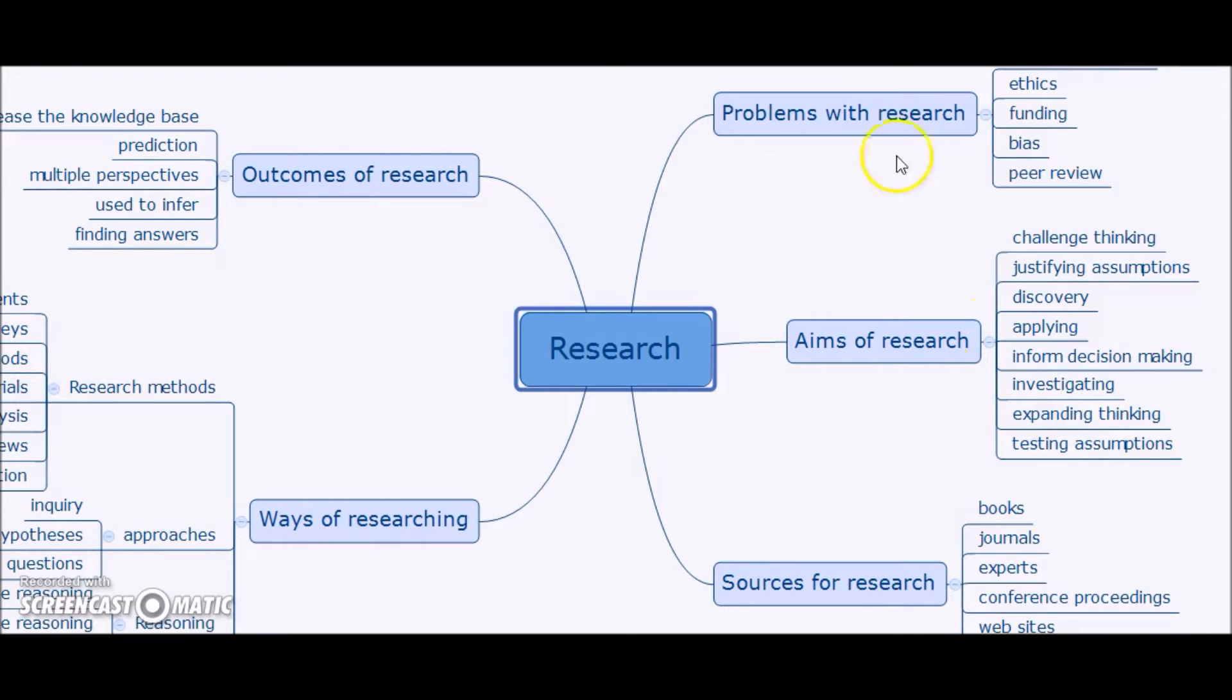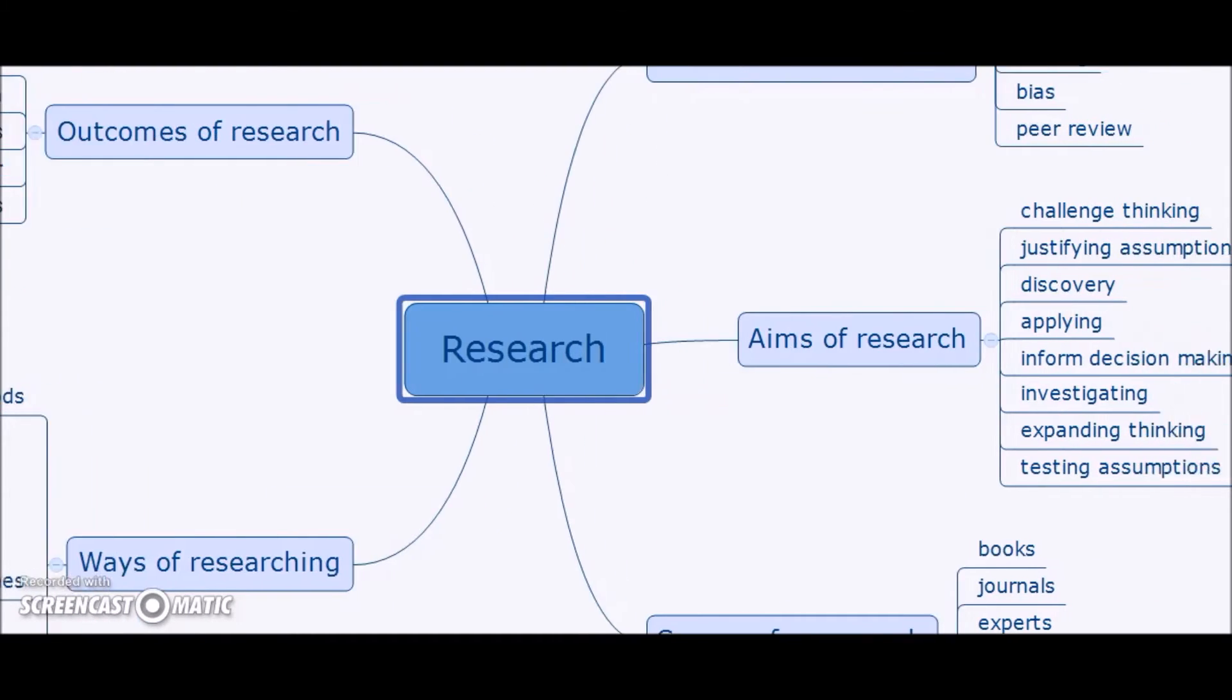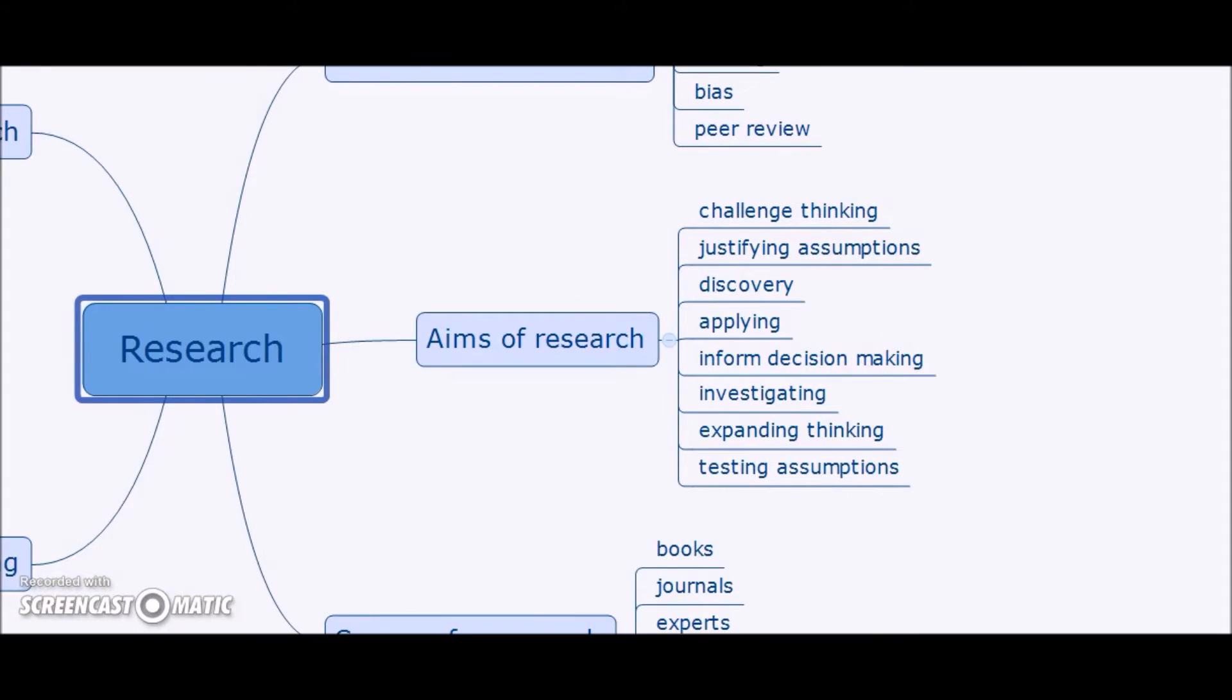So for example, we have problems with research, aims of research, sources for research, ways of researching, and outcomes of research. And I guess if we were going to focus on something that would be our first point of contact, it might be the aims of research. So let's have a little look at what we see as the aims of research.